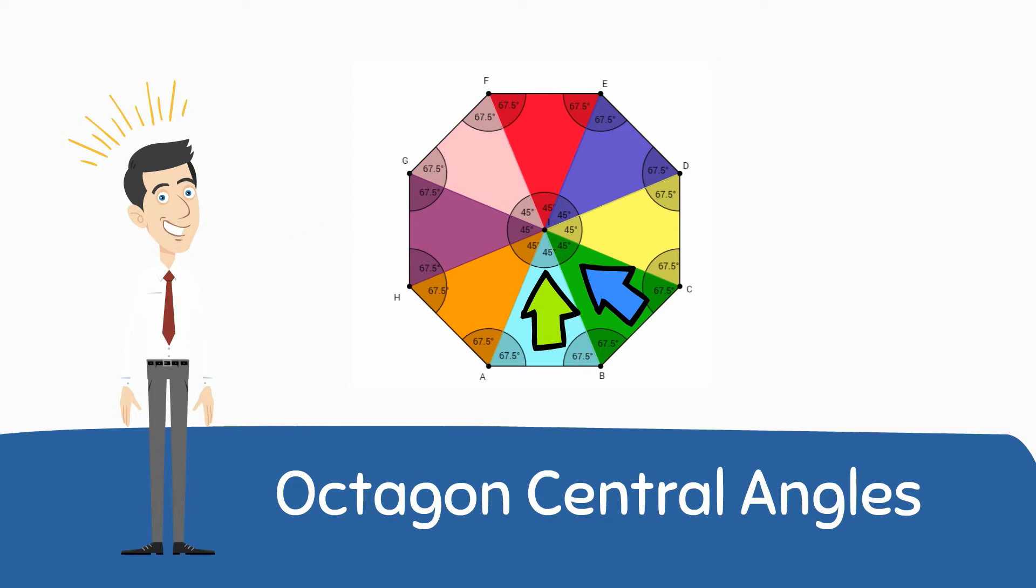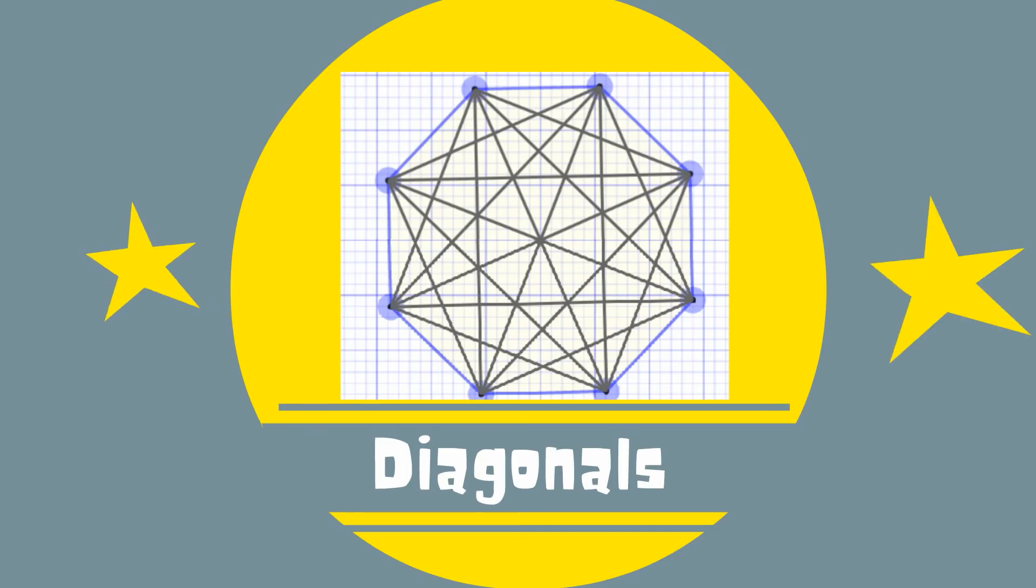The measure of the central angles of an octagon is 360 divided by 8 which is 45 degrees. An octagon has 20 diagonals.